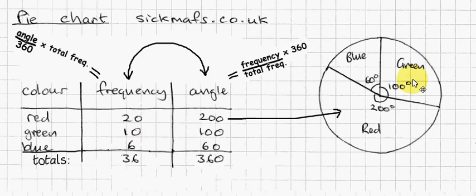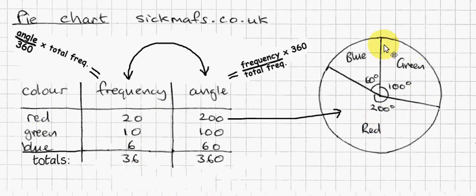And to draw this from the table, you need to convert the frequencies into angles, because you've got a circle with a maximum of 360 degrees in a full circle, and that has to be shared out between the frequencies. So the group with the biggest frequency should have the biggest piece of the pie. How do I convert from the frequency to an angle, which is needed to make this pie chart? Well, how much of the 360 degrees should belong to the red category?